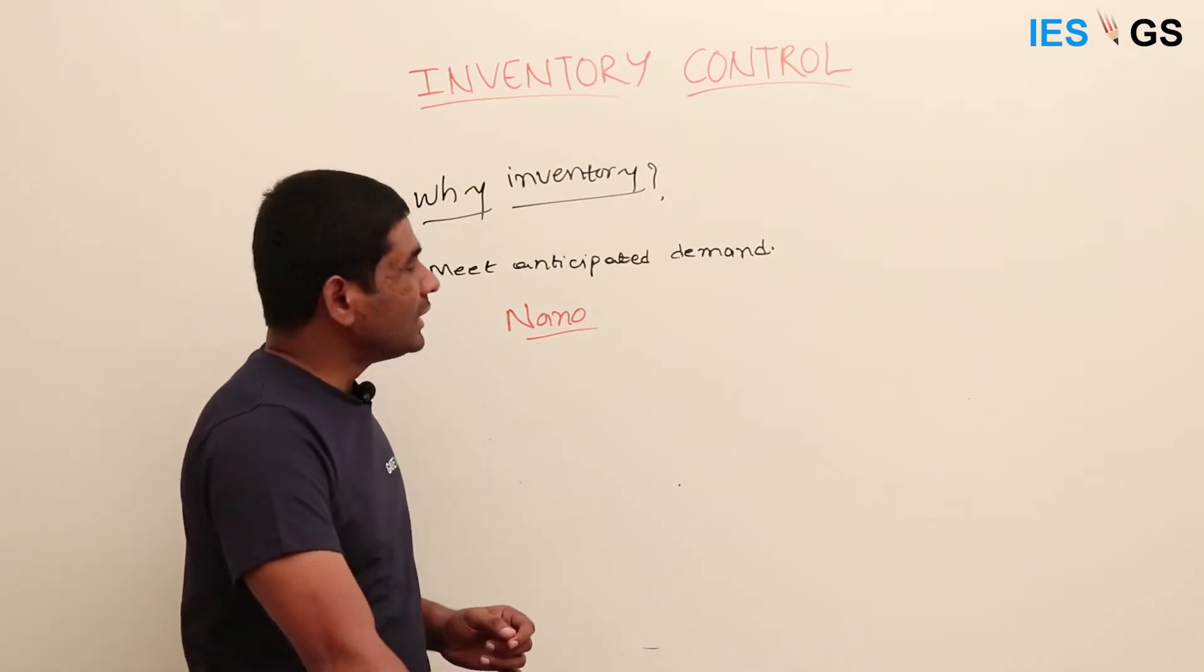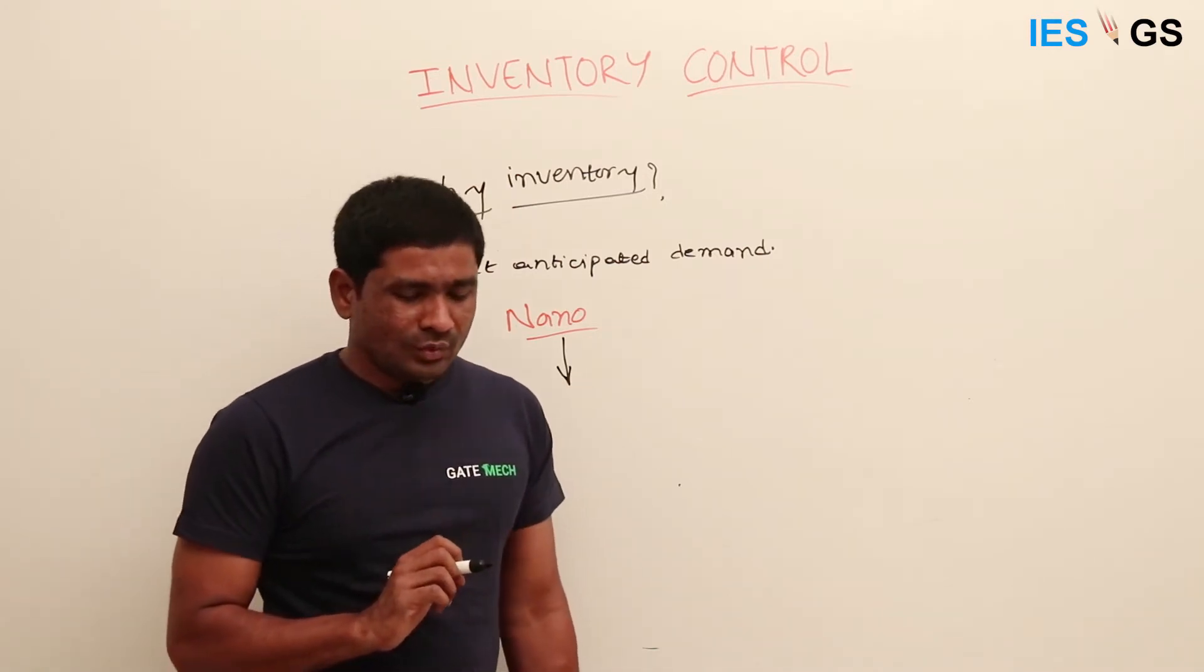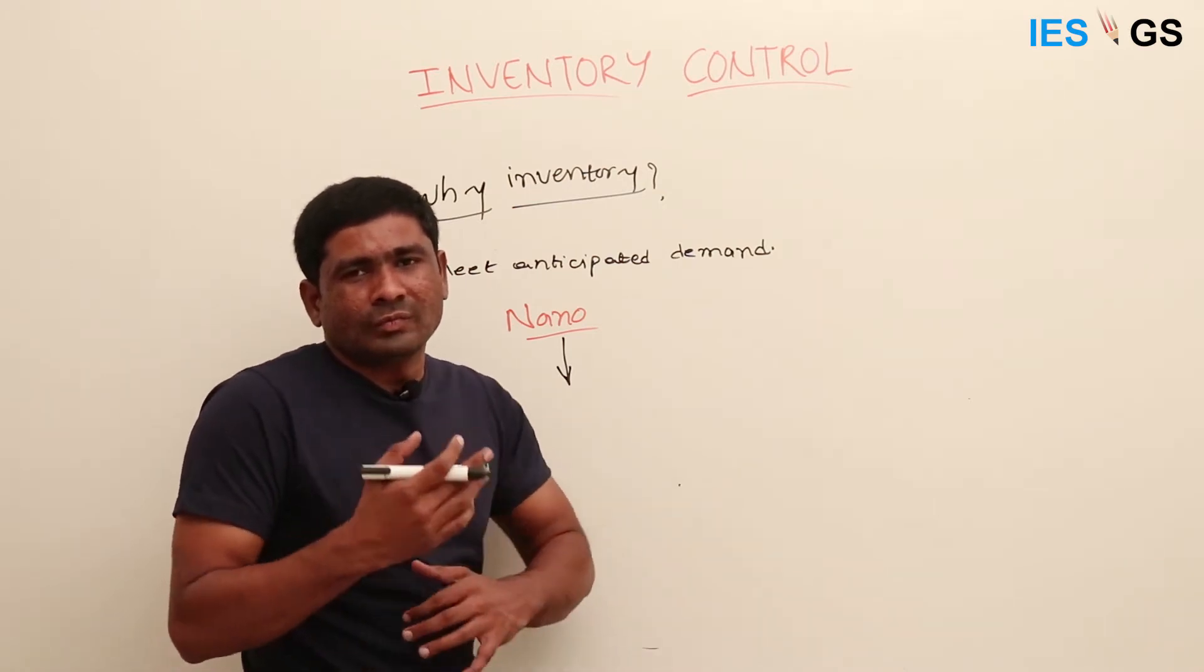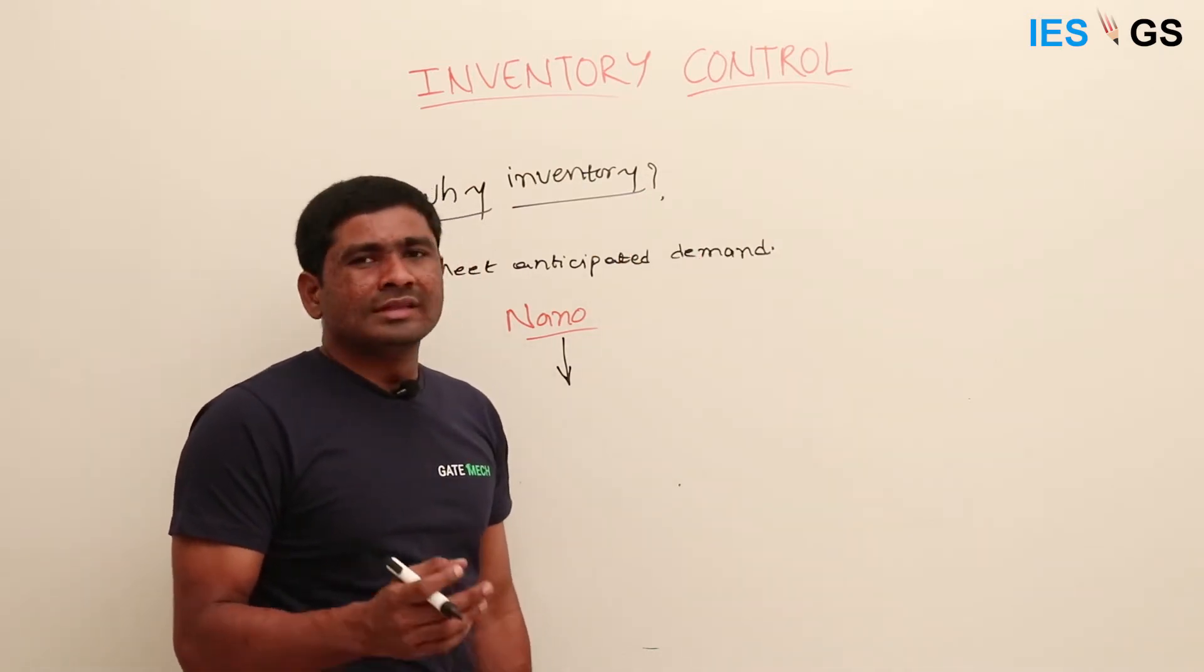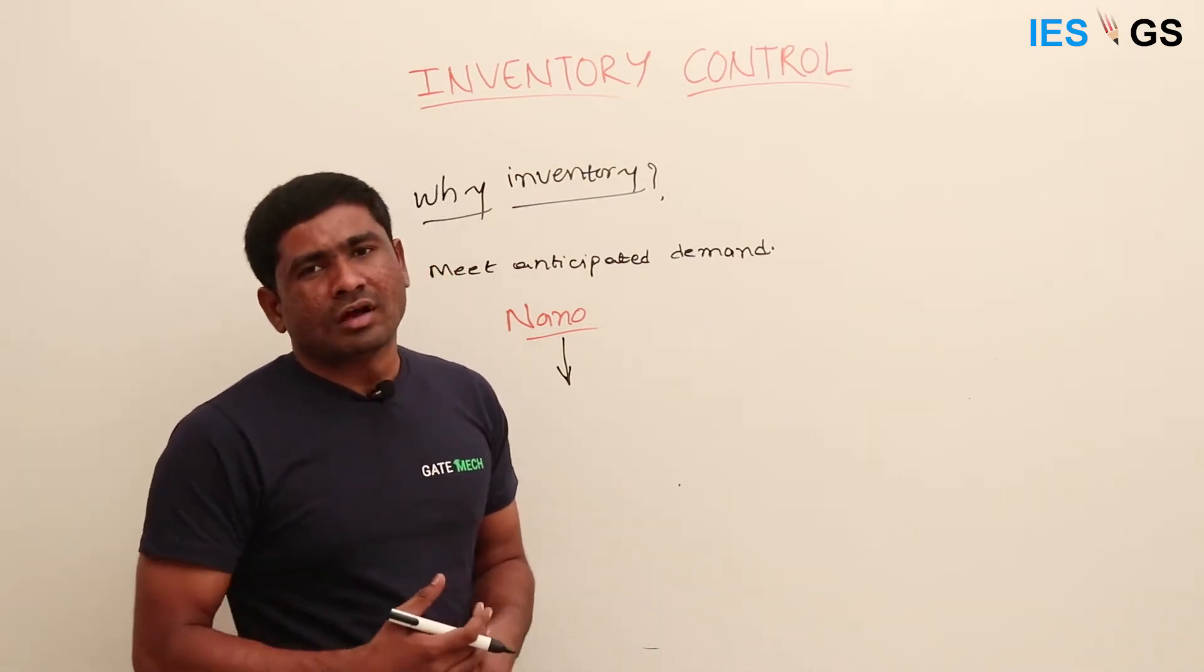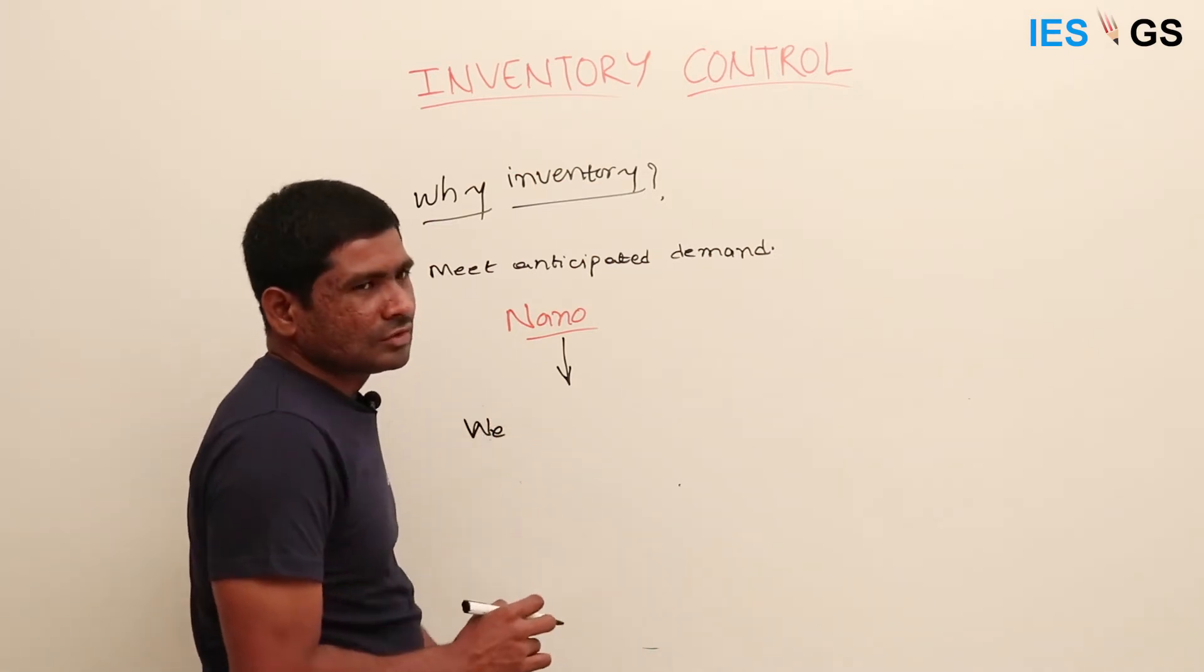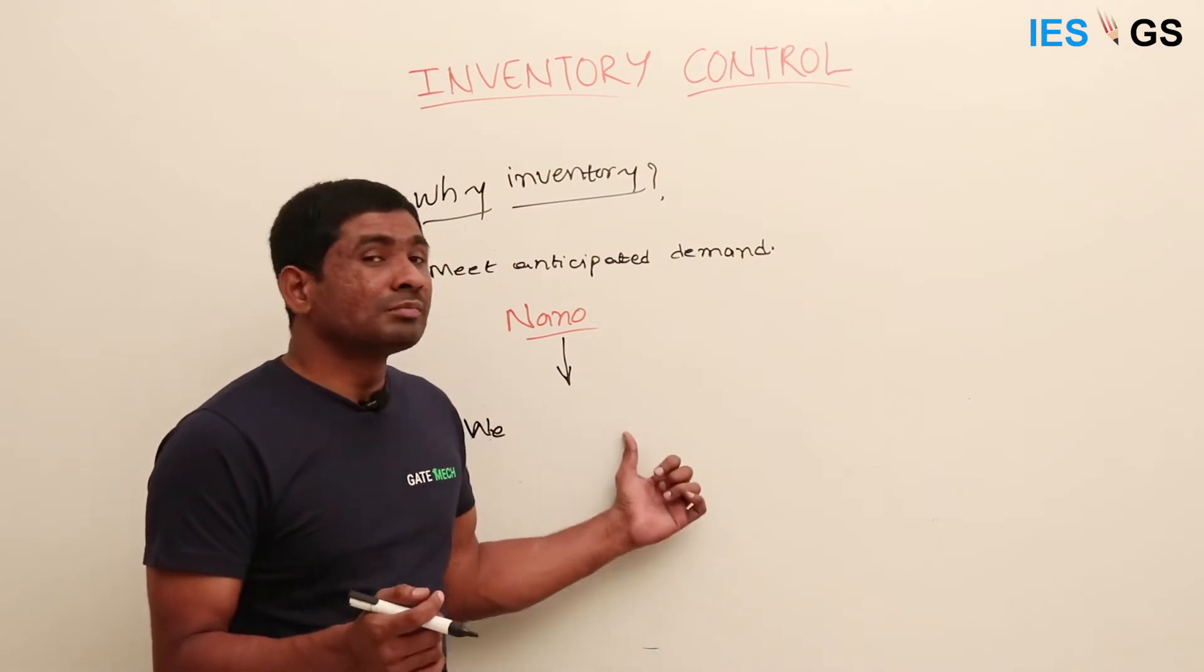But what happened? It failed miserably. Let's forget about the quality-related issues of the Nano car, but we'll see this particular case. Initially they tried to manufacture in West Bengal, but because of some reasons they had to shift to Gujarat. In between, they lost a lot of time and couldn't keep their promises for timely delivery. In any industry we need to catch the customers when they are very excited. Before their excitement fades away, we need to deliver the product.